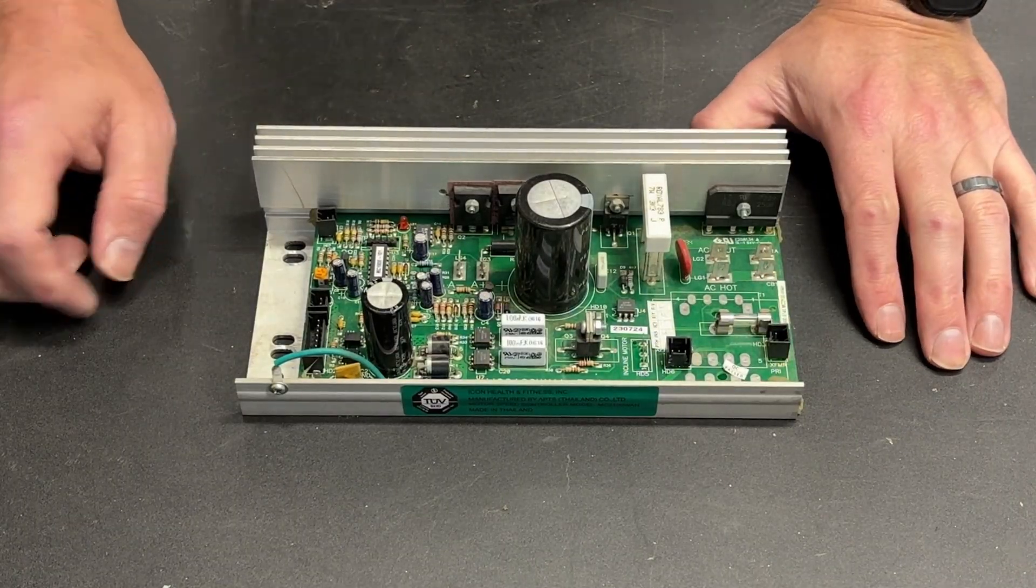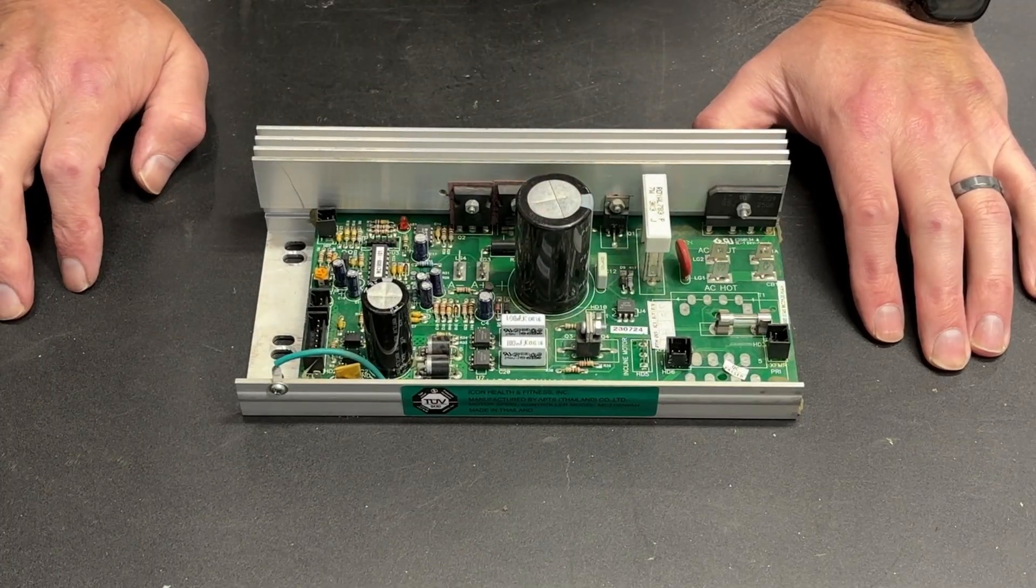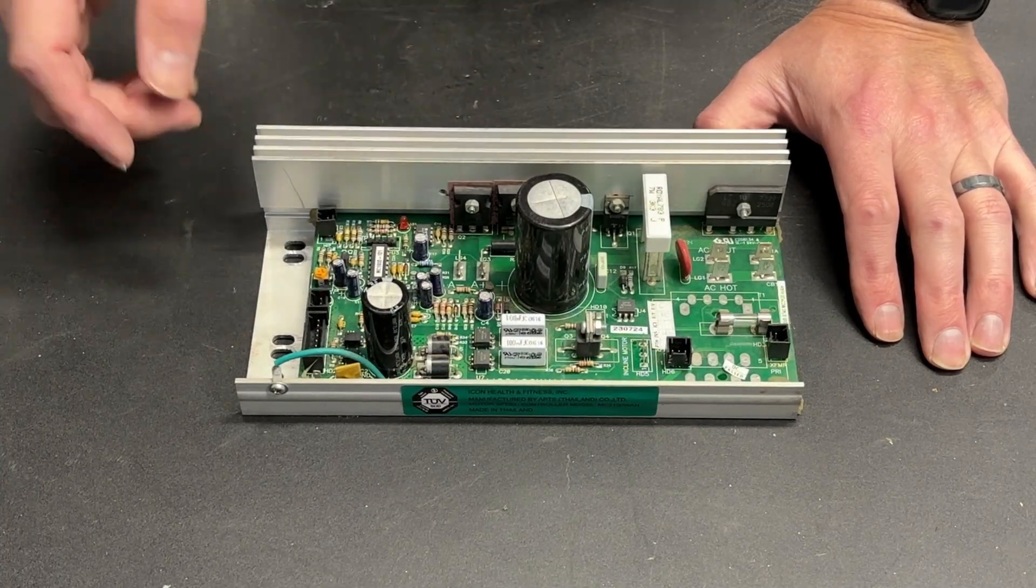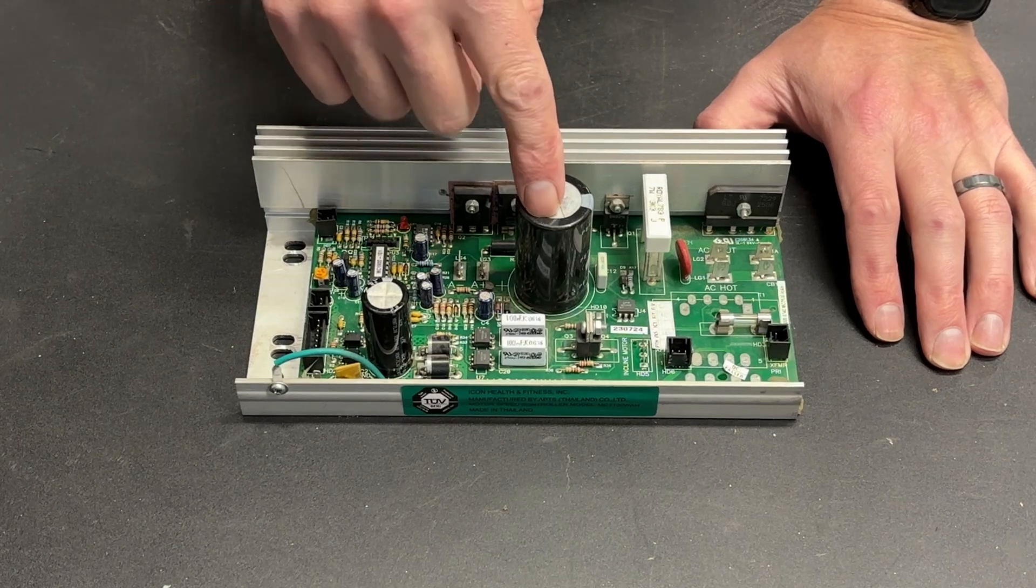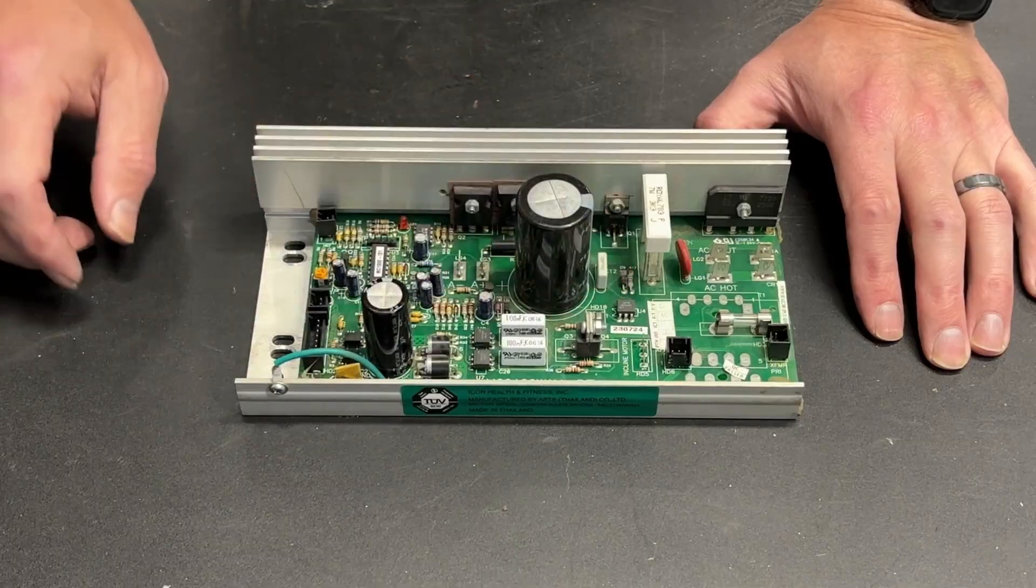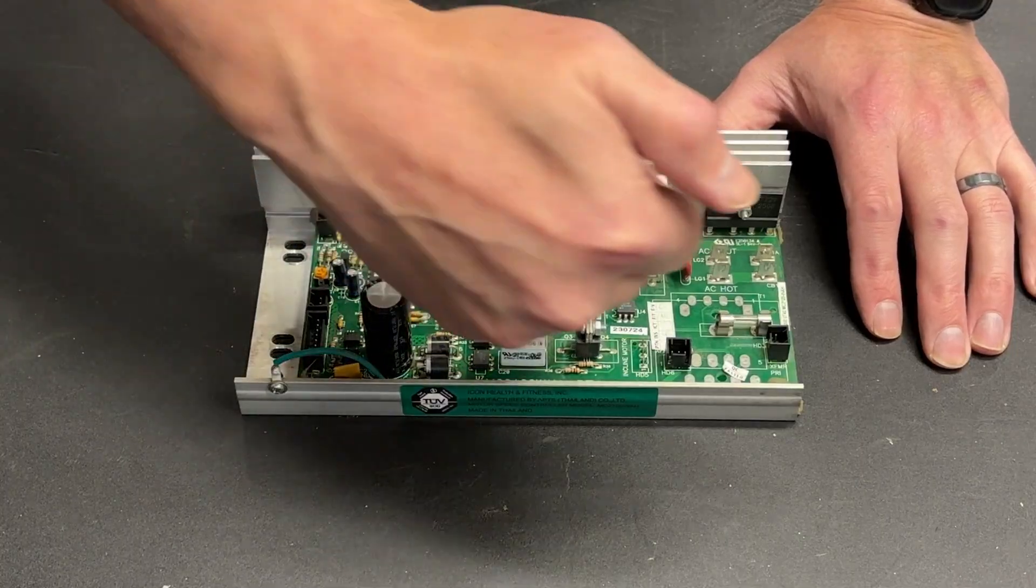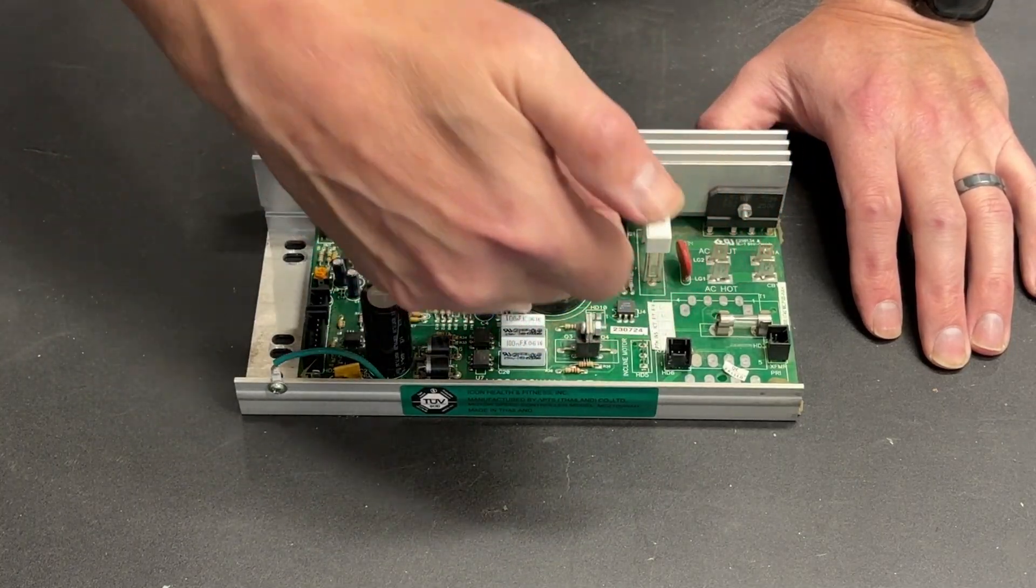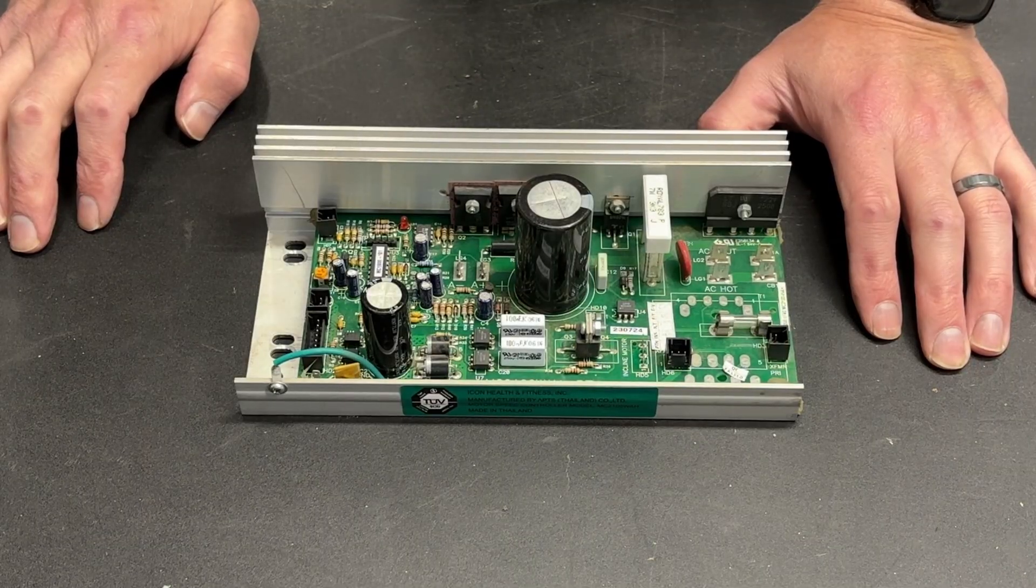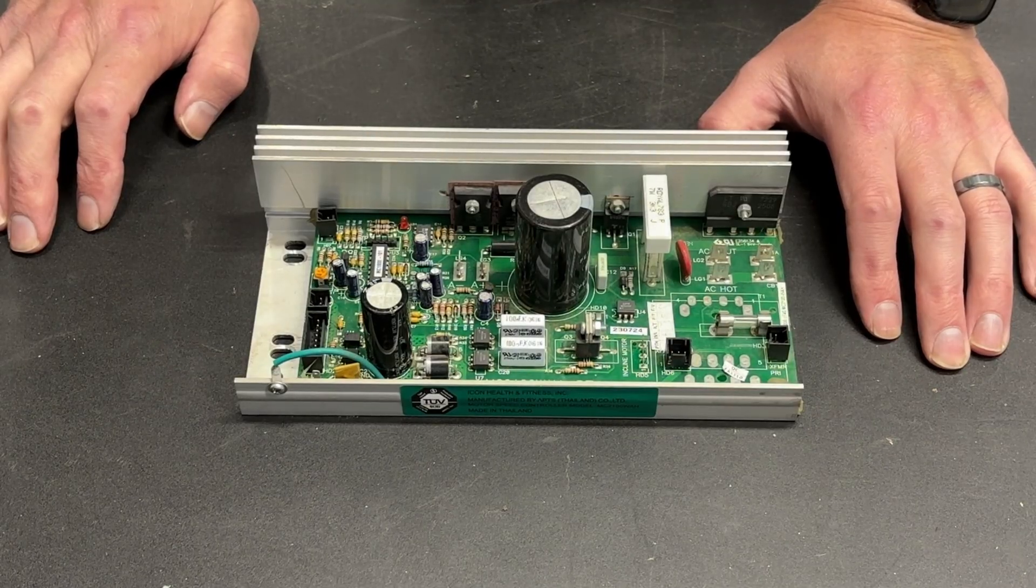The second component that tends to fail on these boards is the capacitor. Now, spotting a bad capacitor is usually pretty easy. You will see one of three things or a combination of all three: you will see this swollen, it will be significantly deformed, sometimes it'll be domed on top and swollen on the sides. You will see a split in the case. You will see goo leaking out of the capacitor onto the board. Any one of those three things indicates that the capacitor is bad. And more often than not, if the capacitor does go bad, you're going to see at least two of those things.